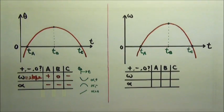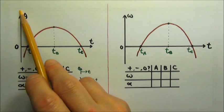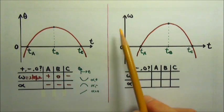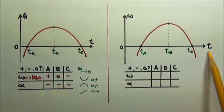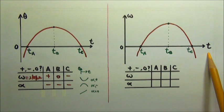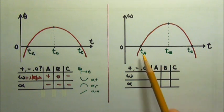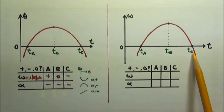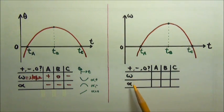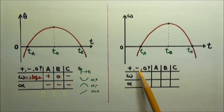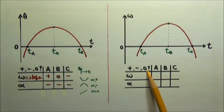Now instead of angular displacement, we have an angular velocity as a function of time graph. State for each of the moments a, b, and c whether the angular velocity and angular acceleration are positive, negative, or zero.